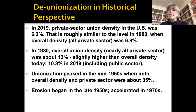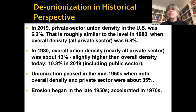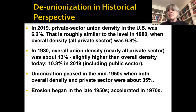In the United States, unionization reached its peak in the mid-1950s. At that point, both overall and in the private sector, density was about 35% — roughly six times more than it is now. The erosion began in the late 1950s, quite a long time ago, but it really took off in the late 70s and especially after 1980.